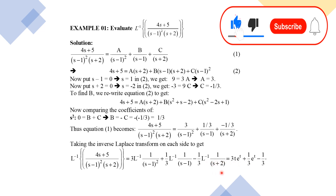The final answer for example 1 is: L⁻¹{(4s+5)/[(s−1)²(s+2)]} = 3t·eᵗ + (1/3)eᵗ − (1/3)e^(−2t). Since there is a minus sign in (s + 2), the inverse Laplace gives e^(−2t).